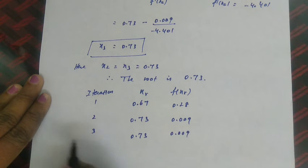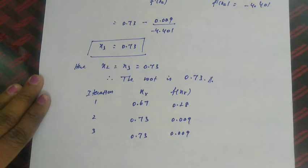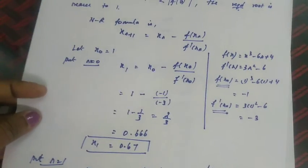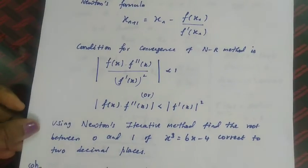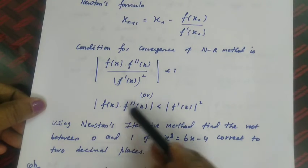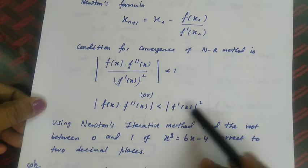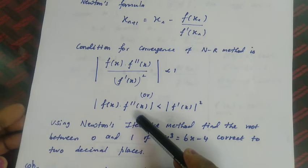In an examination, if you do not have time you can stop without the full table — it does not matter. So, the NR method formula is x_{n+1} = x_n - f(x_n)/f'(x_n), and the convergence condition is |f(x) · f''(x)| < |f'(x)|².